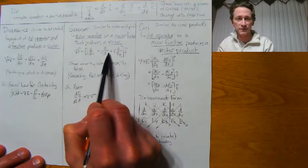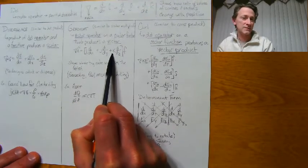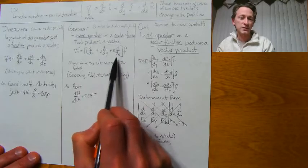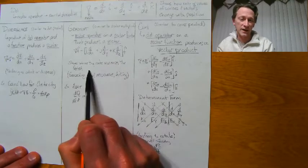notice we have our unit vectors in front because it keeps it as a vector value once you take the derivatives. It shows where the rate will increase the fastest.